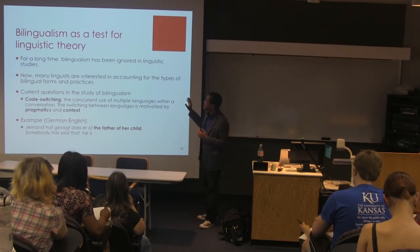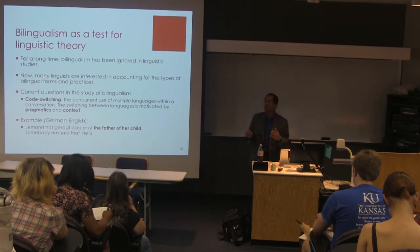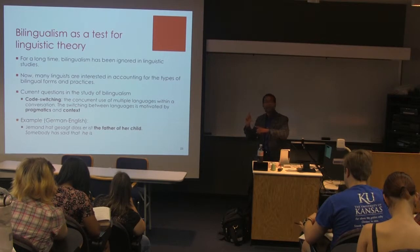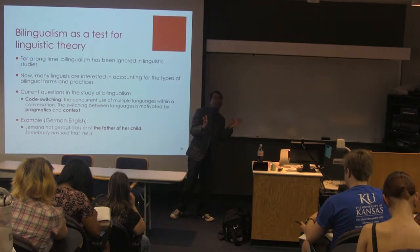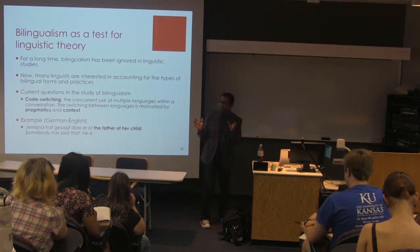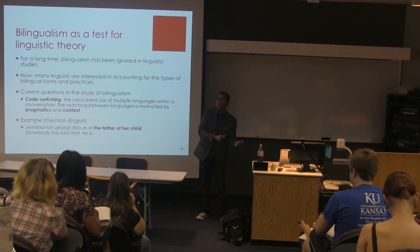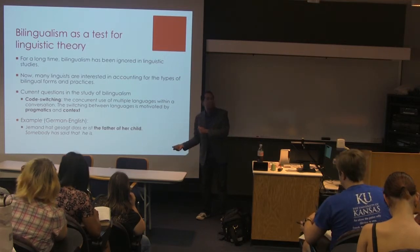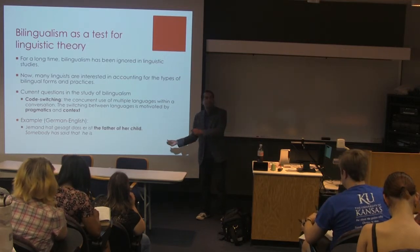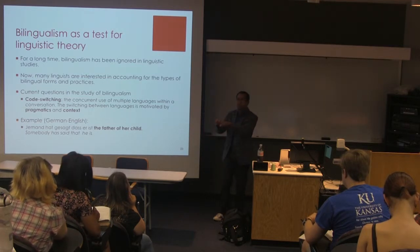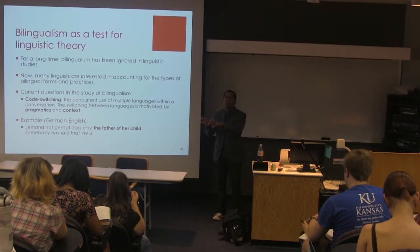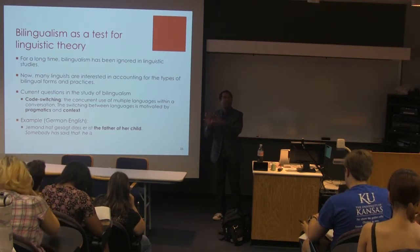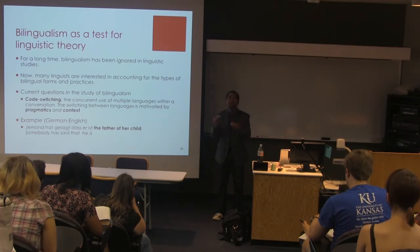One of the things we're interested in with bilingualism — understanding when one language is produced versus another — is the notion of code-switching: the concurrent use of multiple languages within a conversation, where you get this switching back and forth. A lot of people, when they hear Spanish speakers locally switching between Spanish and English, think that those switches happen haphazardly. But there are actual rules and explanations for what's going on with this switching.